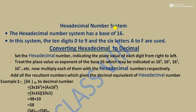Hexadecimal Number System: The hexadecimal number system has a base of 16. In this system, digits 0 to 9 and the 6 letters A to F are used. A is equivalent to 10, B is 11, C is 12, D is 13, E is 14, and F is 15 — making a total of 16 symbols.